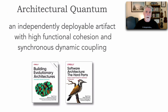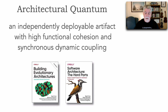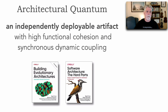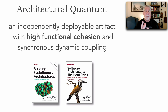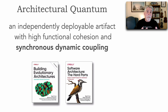In the Building Evolutionary Architectures book by Neil Ford, Rebecca Parsons, and Patrick Croix, they identified the concept of an architectural quantum, which we later refined in Software Architecture the Hard Parts. Basically, it's an independently deployable artifact with high functional cohesion and synchronous dynamic coupling. This includes all of the things needed for that functionality to work: user interfaces, services, gateways, databases, brokers — all of that.